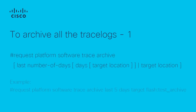If you want to archive all the trace logs relevant to all the processes running on your system since the last reload on the switch, and to save this in a specified location, use the command: request platform software trace archive. After execution of this command, you will see a file with .tar.gz format in flash. This example shows how to archive all the trace logs of the processes running on the switch since the last 5 days.